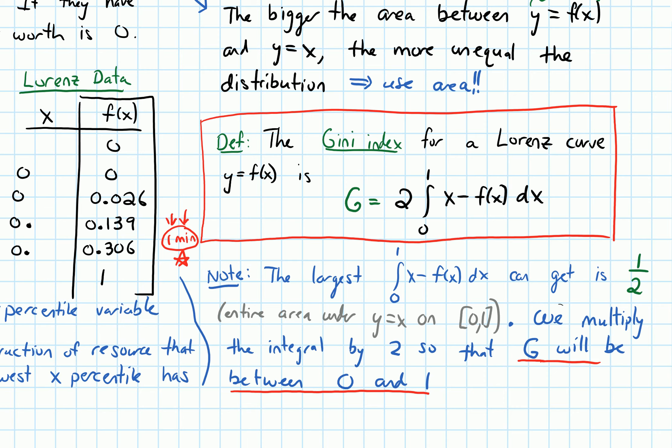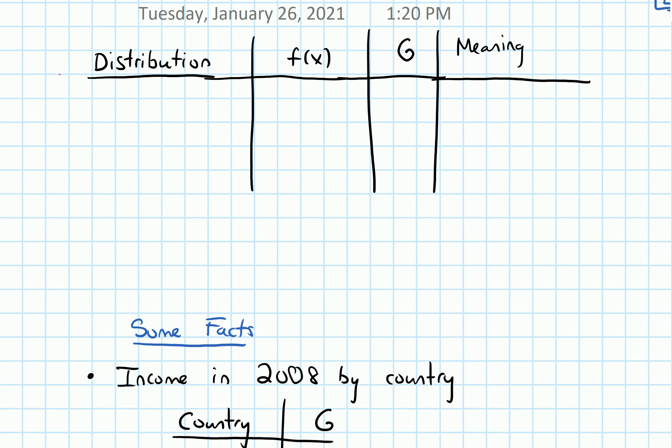Now that we have the Gini index defined, I want to make a table that will summarize what the Gini index is for a perfectly equal distribution and a perfectly unequal distribution. I'm going to make this table here that will keep track of the type of distribution. In a perfectly equal situation, we know what that curve is. It's f(x) = x. And in that case, we'd just be finding the area between x and itself. There would be no area, so the Gini index would be zero.